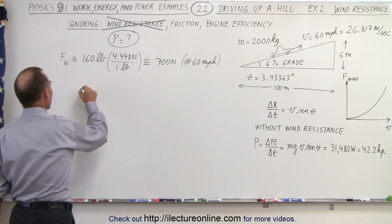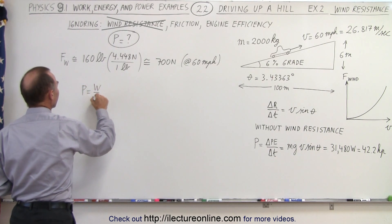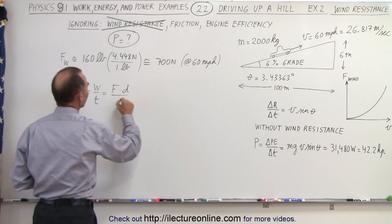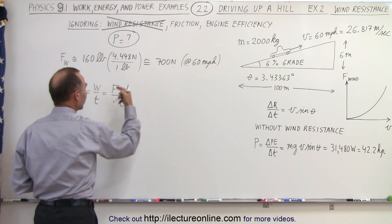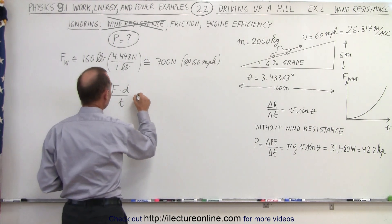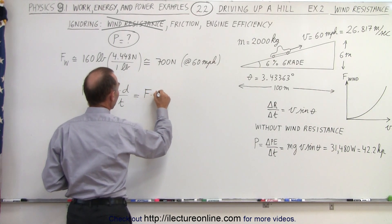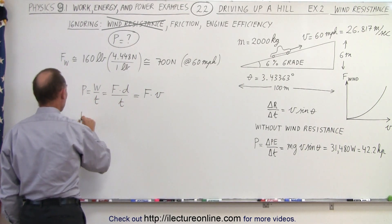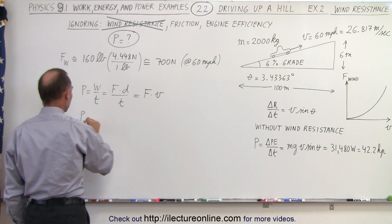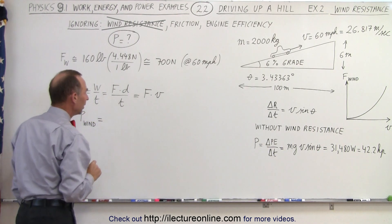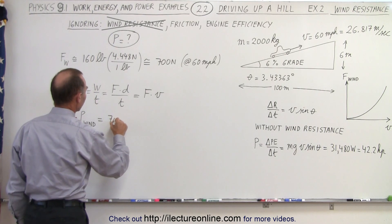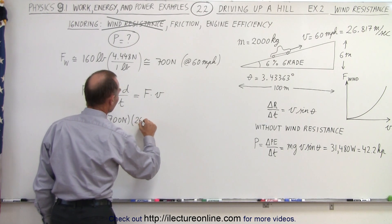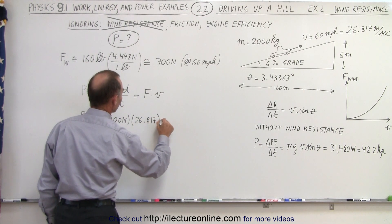The definition of power is equal to work divided by time, and work is defined as force times distance divided by the time. And distance divided by the time is velocity. So therefore, it's equal to the force times the velocity of the car. The force is known, the velocity of the car is known, so the power required to overcome the wind resistance is equal to a force of 700 newtons and a velocity of 26.817 meters per second.